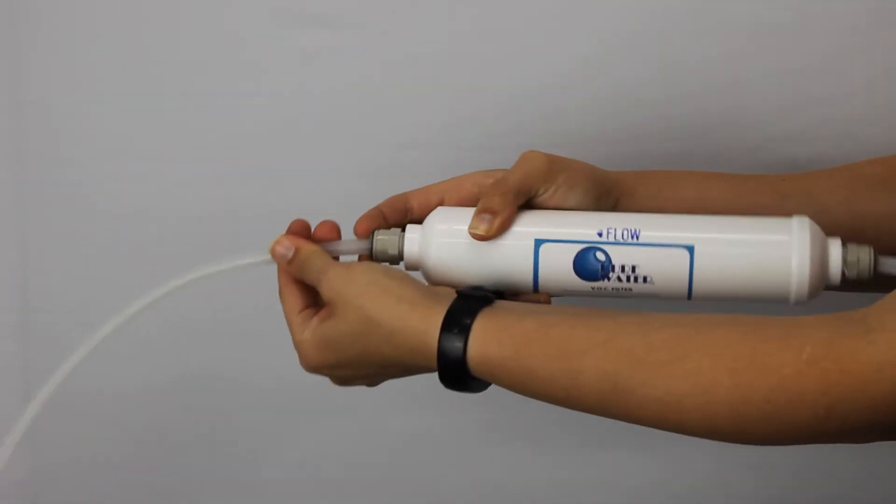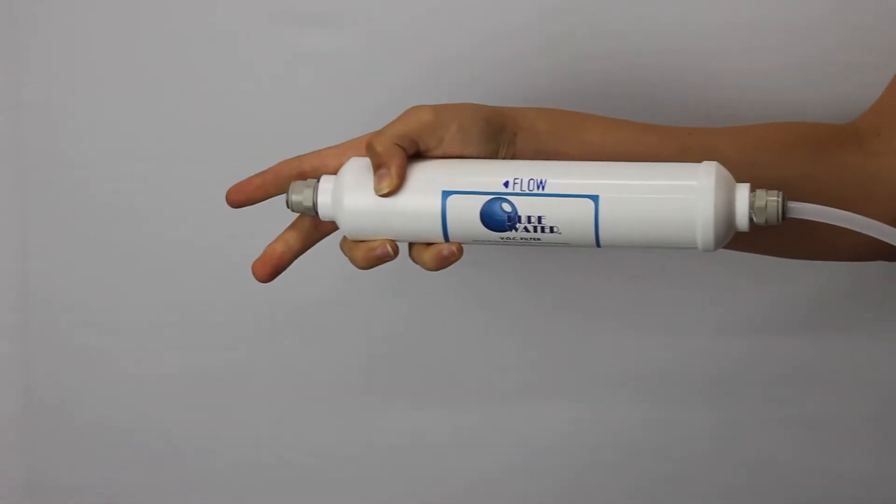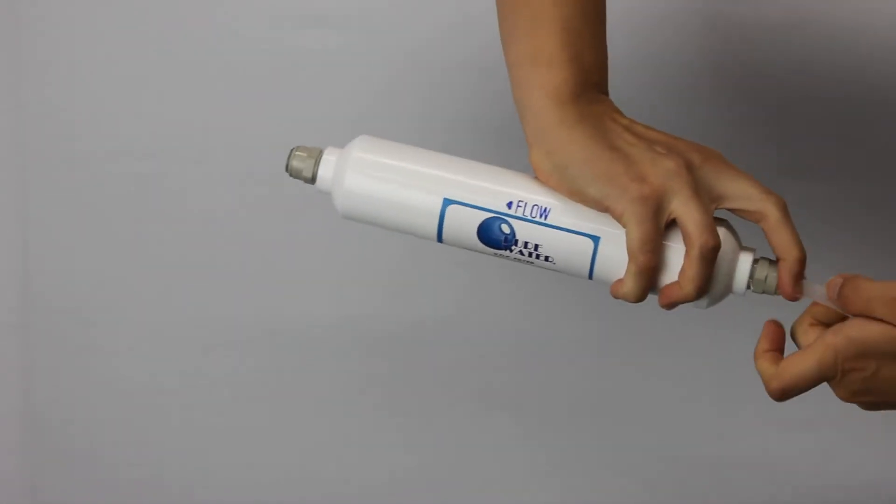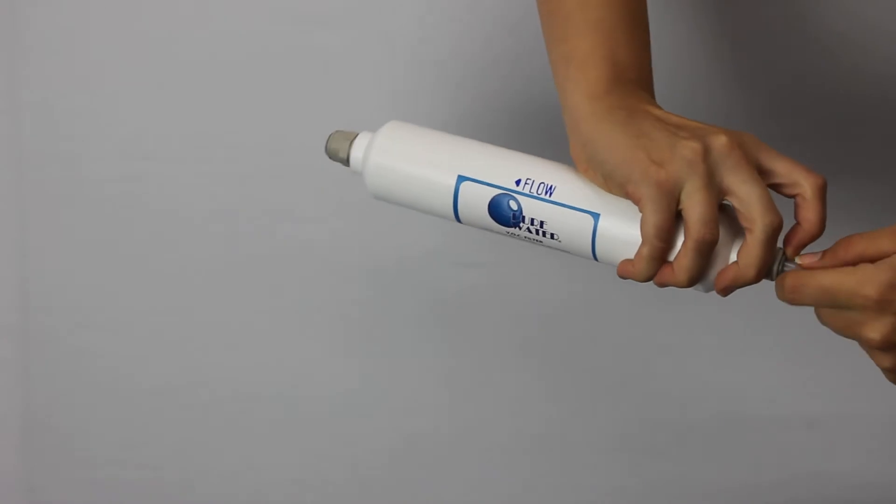Remove the post filter by releasing the tubing from either end. Do this by pressing in on the collet around the hose while pulling the tube out.